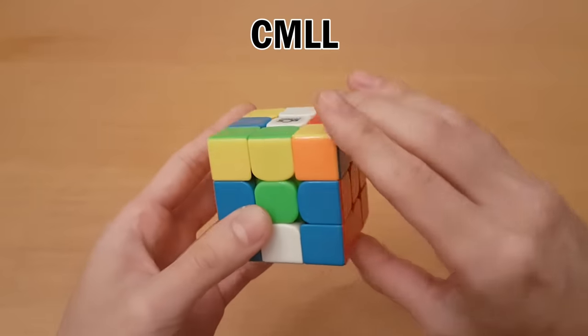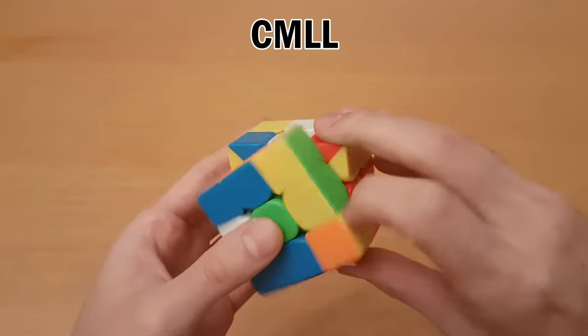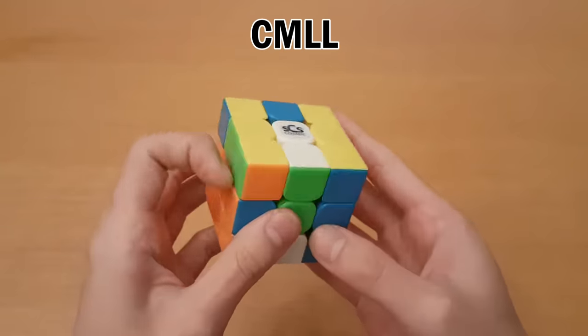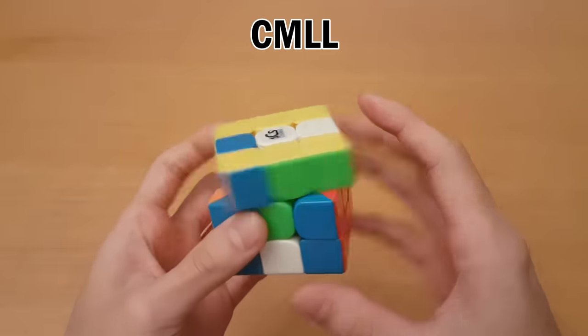Next we do CMLL, and I'm just going to do 2-look. So we do the corners first, and then do the edges. So these two are solved, so this will be J'.